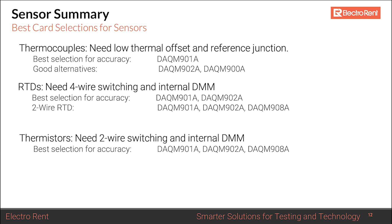RTDs generally require four-wire switching — and even three-wire RTDs still need four-wire switching capability — so the best cards are the DAQM901A and DAQM902A. For two-wire RTDs, the DAQM908A can also be used. Thermistors only need two-wire measurement with a standard resistance measurement, as they typically have around 5000 ohms resistance. Suitable cards for thermistors include the DAQM901A, DAQM902A, and DAQM908A.